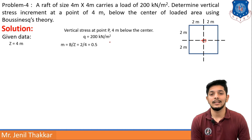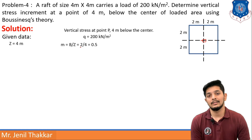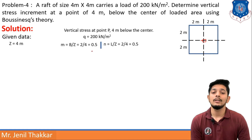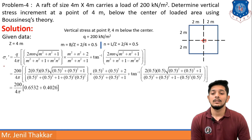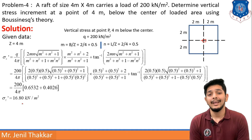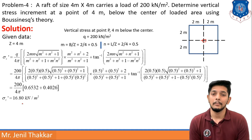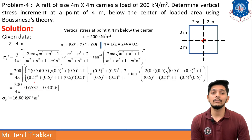From the question you should understand which formula to use. We have to find M and N first. M = B/Z, where B = 2 and Z = 4, so M = 0.5. Similarly, N = L/Z and N = 0.5 as well. Putting the rectangular loading formula, I am getting σz' = 16.80 kN/m². In this formula we put M, N, and Q values. The mathematics is simple but lengthy.